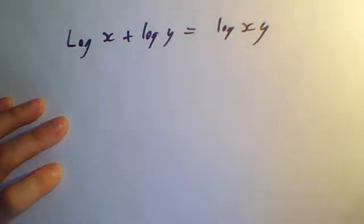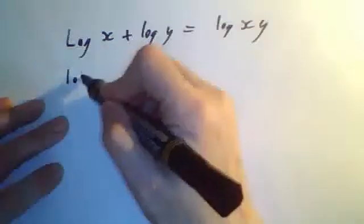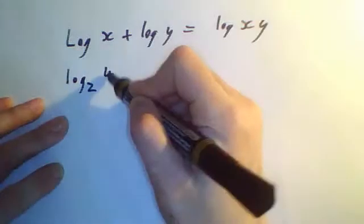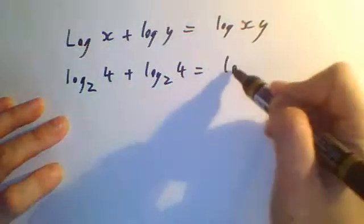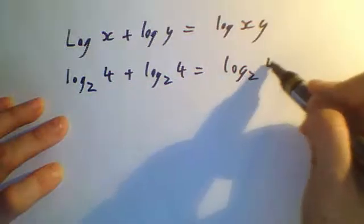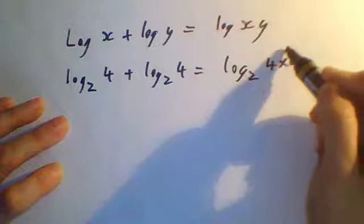I'll just try it with a simple example. Log base 2 of 4, plus log base 2 of 4, equals log base 2 of 4 times 4, which is 16.